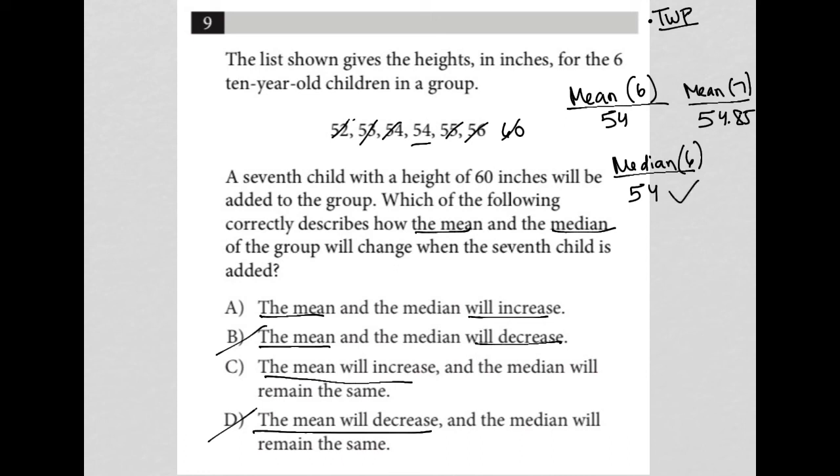So we want increase and remain the same. So choice C is the correct answer. The mean will increase and the median will remain the same.